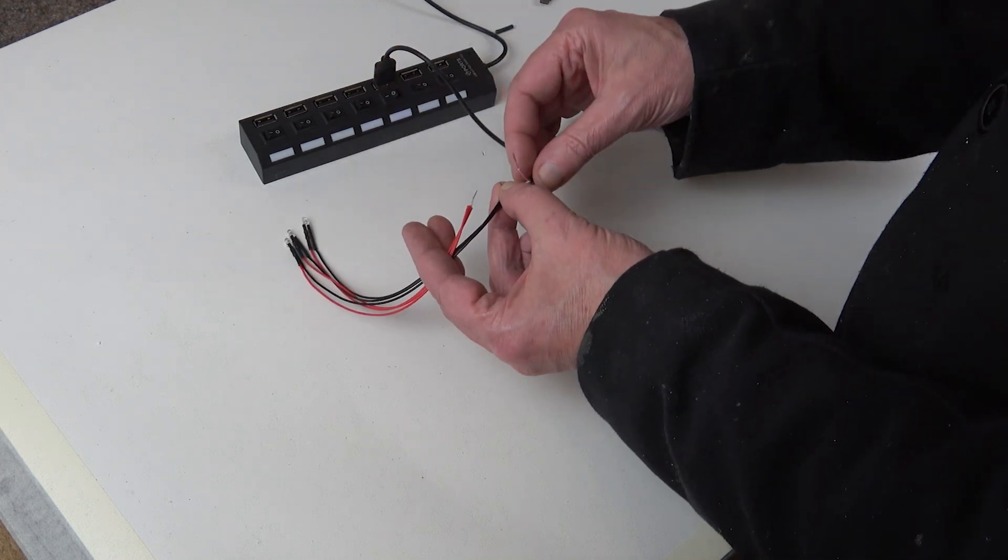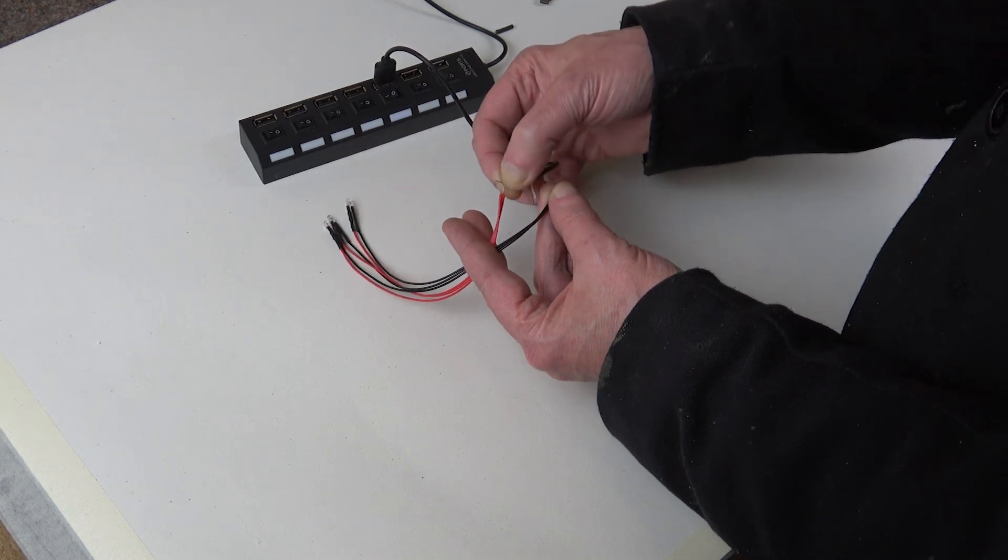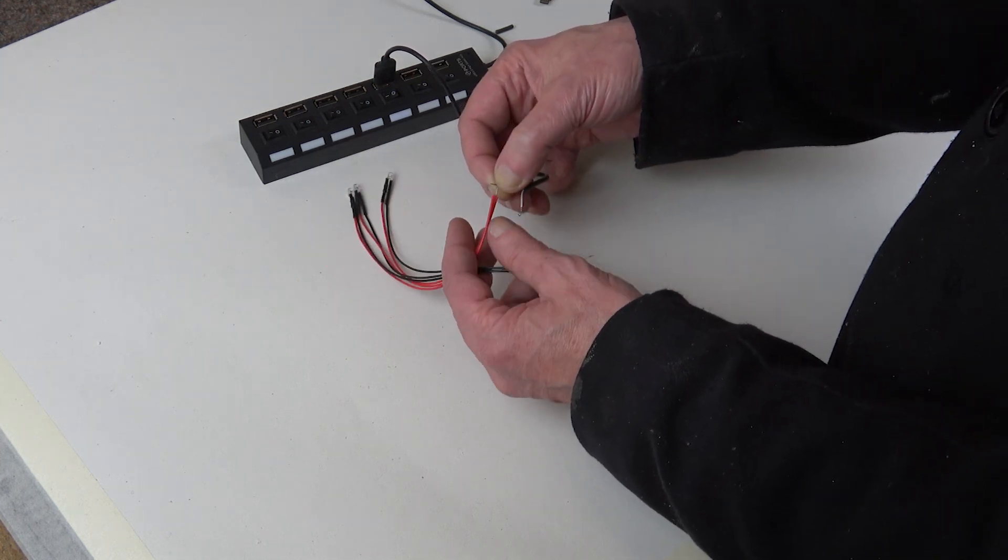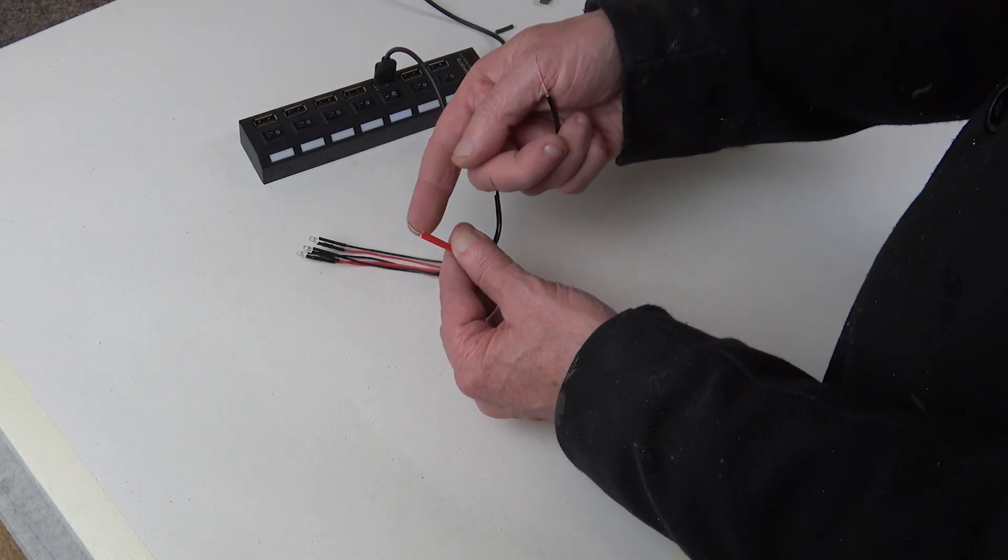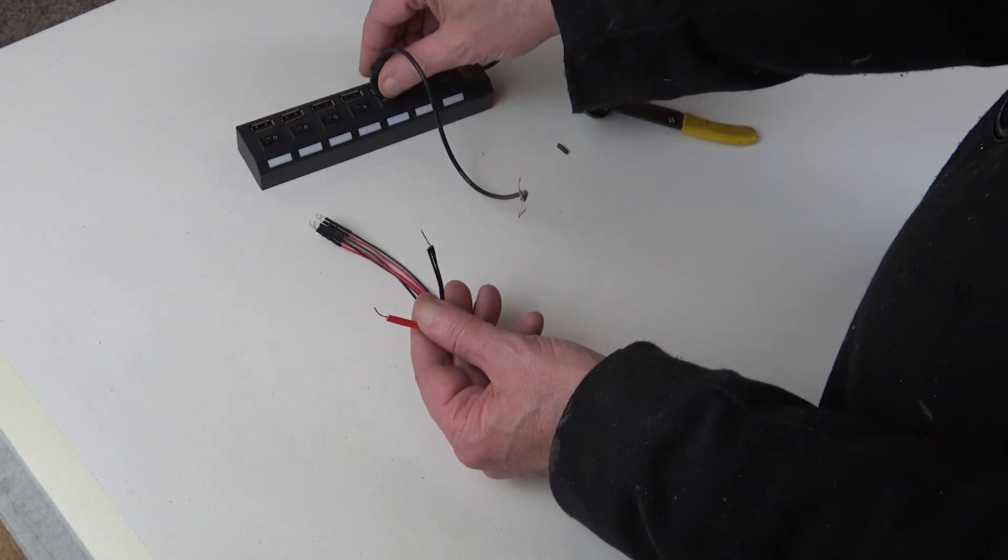So if I try the white one on the black, there we are. So that's the way around it needs to go. I need to do the pinky one to the red wires and the white one to the black wires and the LEDs will light up.